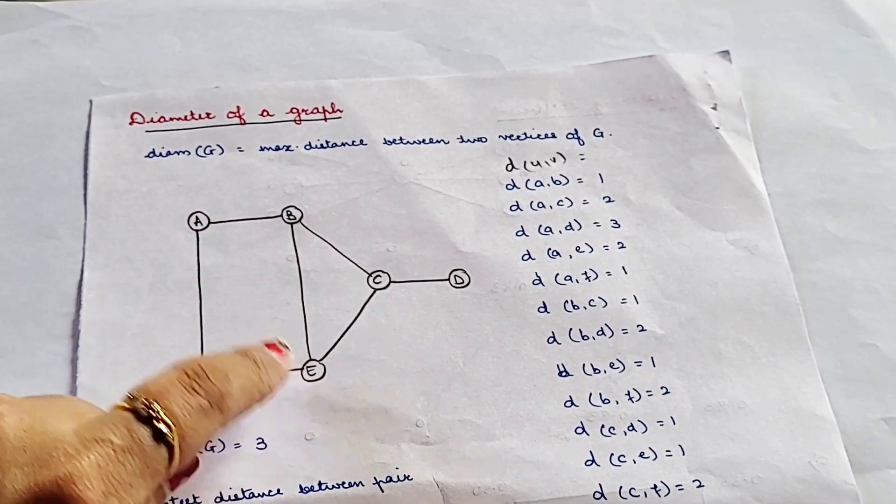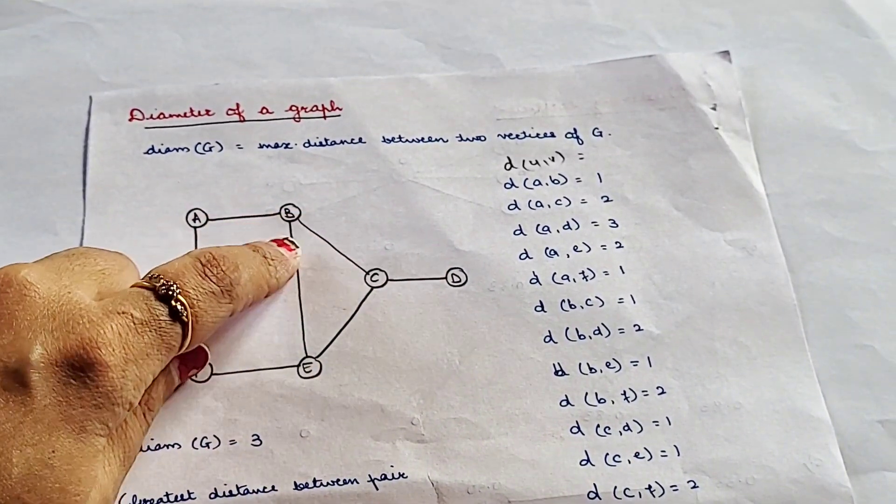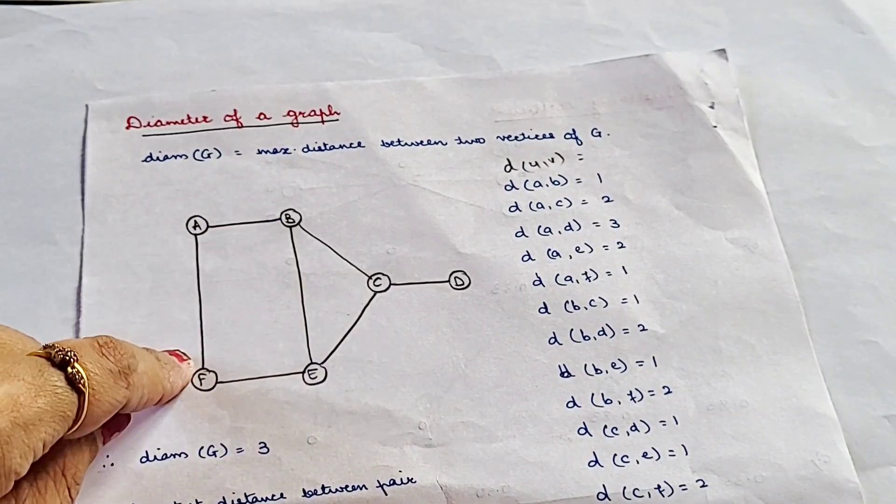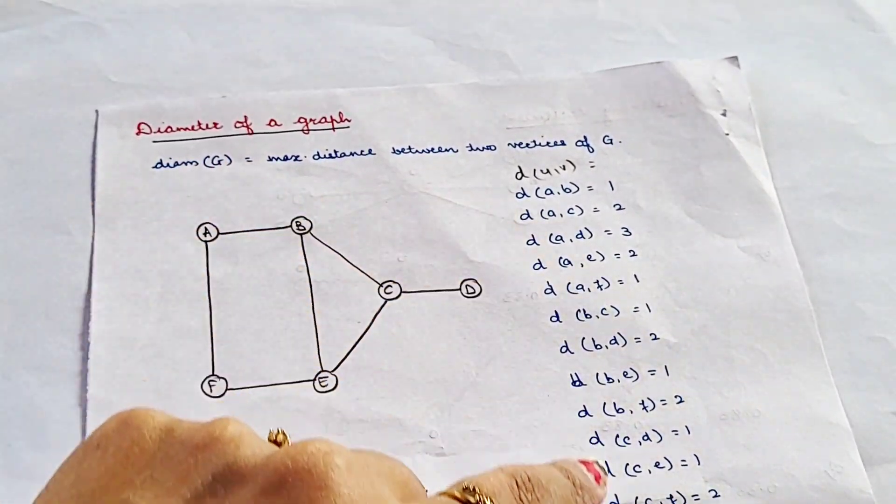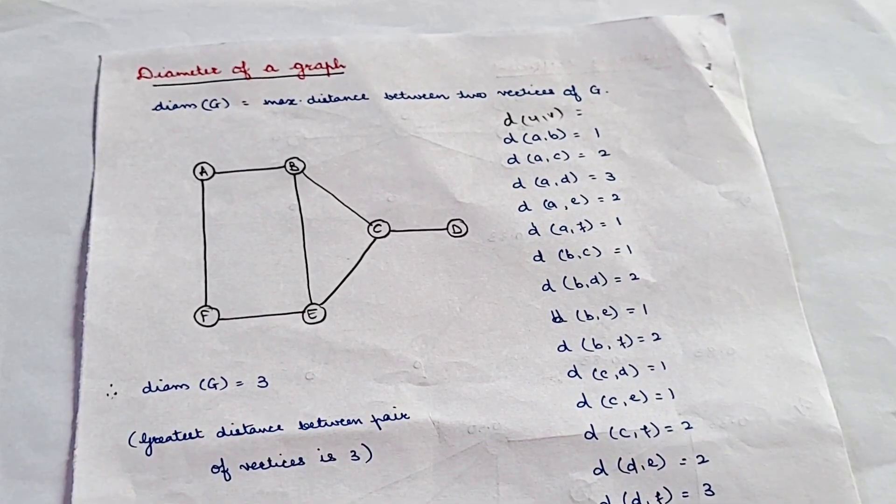So A to B, A to C, A to D, A to E, A to F, then B to C, B to D, B to E, B to F. In this way we will be calculating all the shortest distances and whichever will be the maximum distance out of this will be our diameter of a graph.